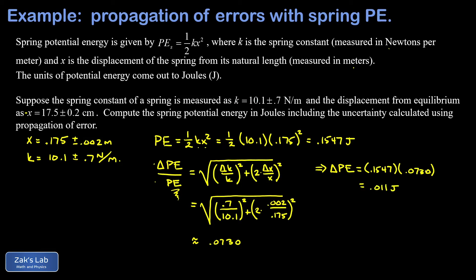Next we round the actual quantity, the potential energy, to the same decimal place addressed by the uncertainty. There's uncertainty in the hundredths place, so we shouldn't express any digits beyond that. We're going to round down to 0.15 for the potential energy, plus or minus 0.01 joules, and we're done.